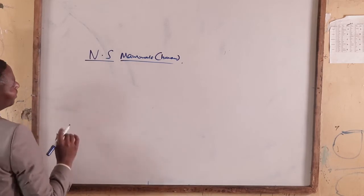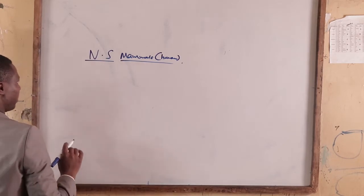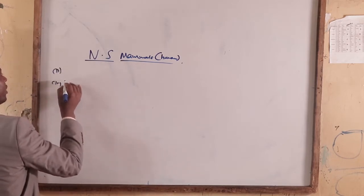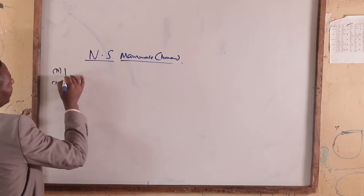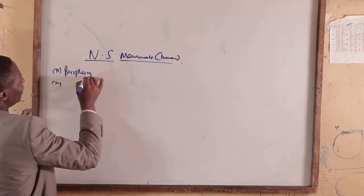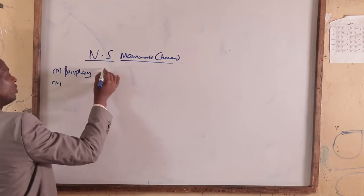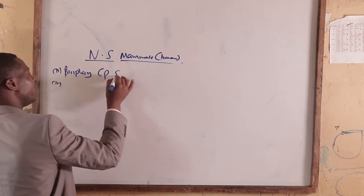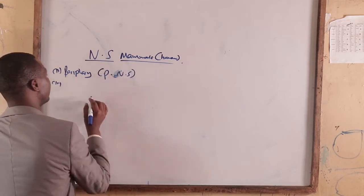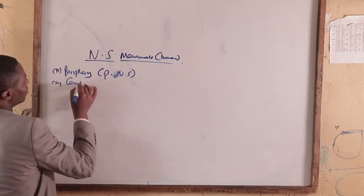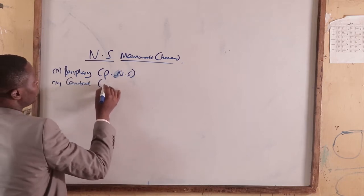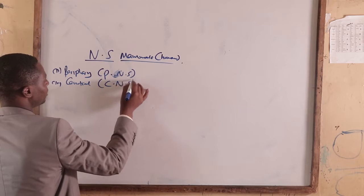Our nervous system is divided into two: we have the peripheral nervous system, which we call PNS, and we have the central nervous system, which we call CNS.